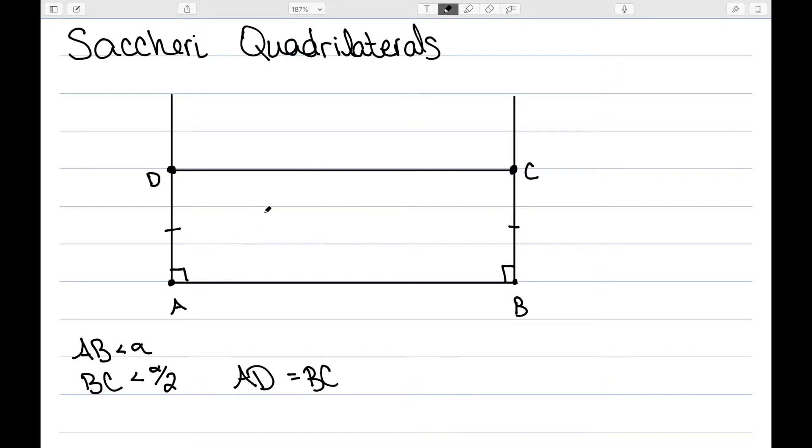And this here is going to be my Saccheri quadrilateral. Since it is possible we're on a sphere, I can't assume this is a rectangle and that these angles up here are 90 degrees. But it is still a Saccheri quadrilateral, as long as it has those two right angles at the bottom.